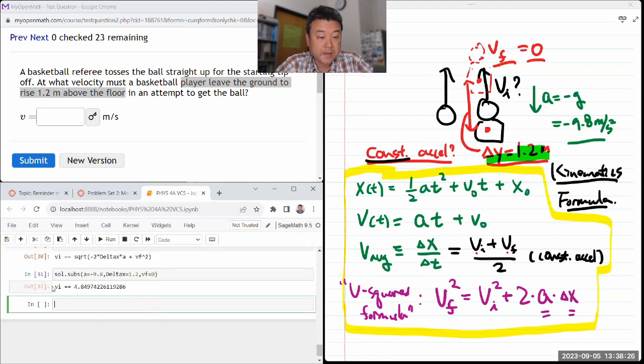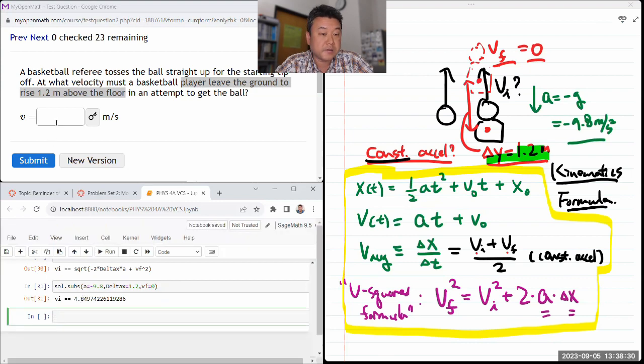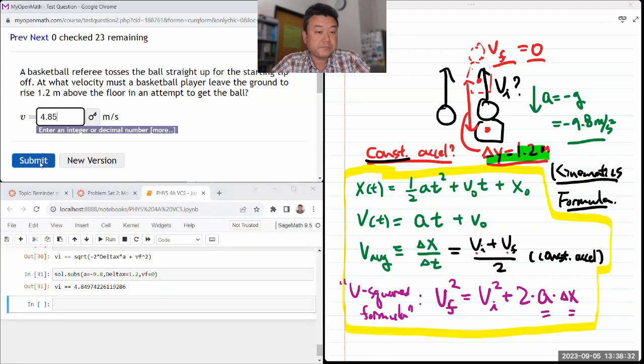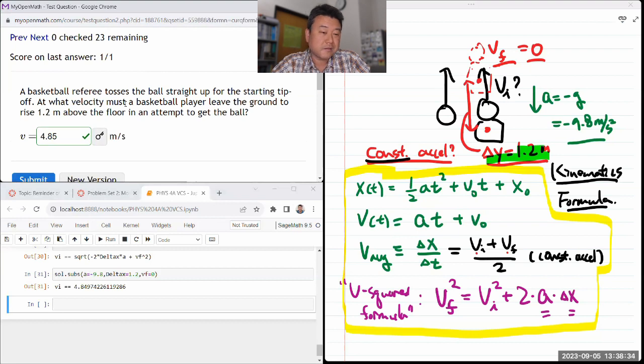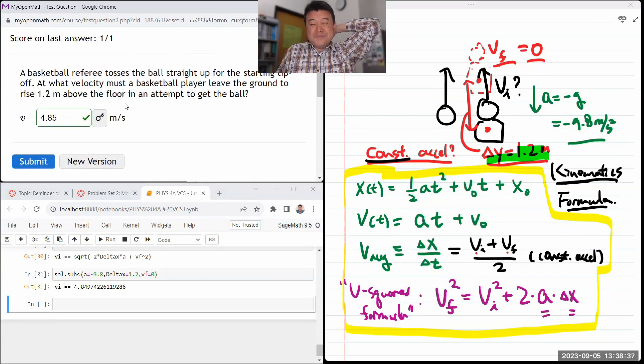Then I get initial speed must be 4.85 meters per second. I don't know if that's reasonable. 10 miles per hour, is that as an initial jump speed? Maybe it's reasonable. I don't know, I don't do sports, so I have very poor number sense for this.